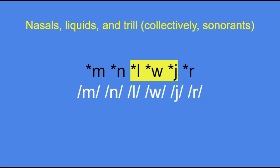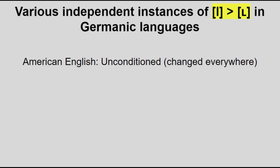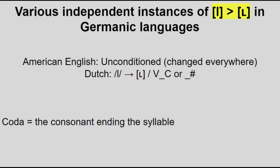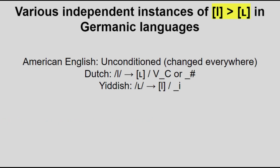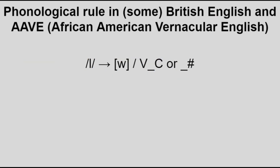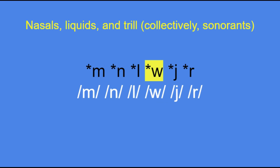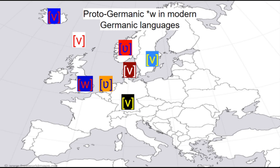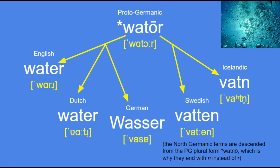For the liquids: l and j mostly stayed the same, except l became dark-l in American English everywhere, in Dutch as an allophone in coda position, and in Yiddish except before i. British English and other varieties also now have a w-like allophone of l in coda position. As for w, it actually changed in most Germanic languages, with only English retaining it as w. Most other Germanic languages shifted to v, with only Dutch and Norwegian shifting to w instead, and these shifts happened mostly individually. For comparison, Proto-Germanic *watōr became English water, Dutch water, German Wasser, Swedish vatten, Icelandic vatn, and so on.